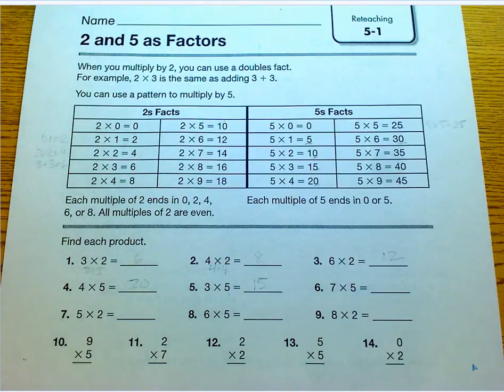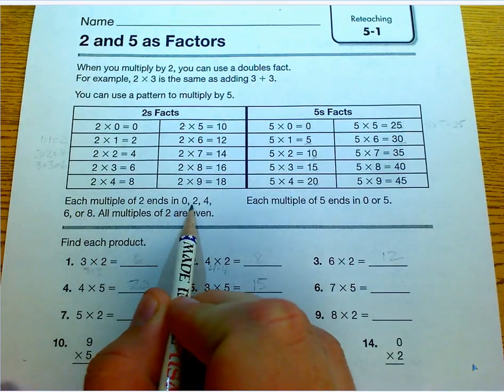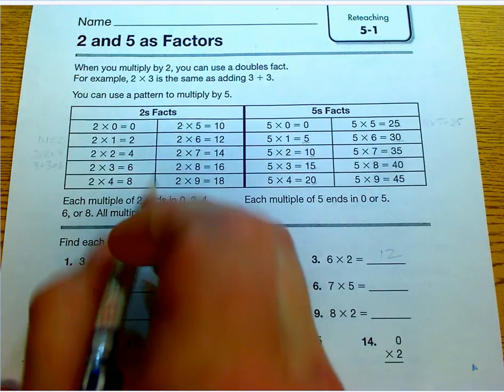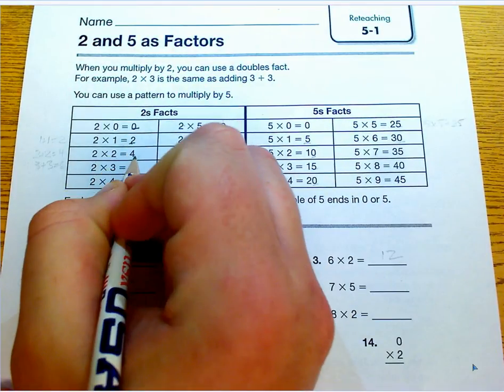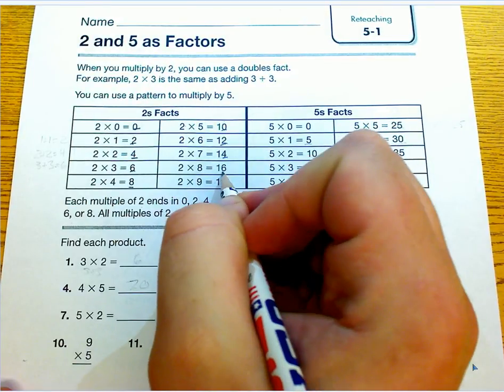So we're just going to focus on a couple new concepts, a couple new patterns with twos and fives that might actually not be new. So with twos, each multiple of two ends in 0, 2, 4, 6, or 8. So all multiples of two are even. And you'll see that here: 0, 2, 4, 6, 8, 0, 2, 4, 6, 8, all of them are even.